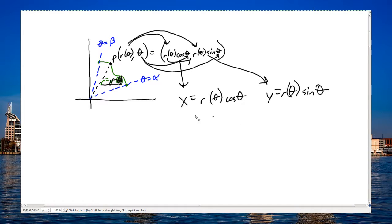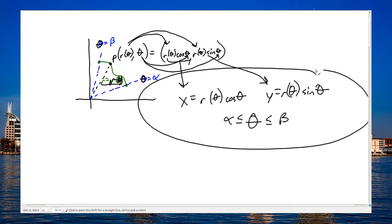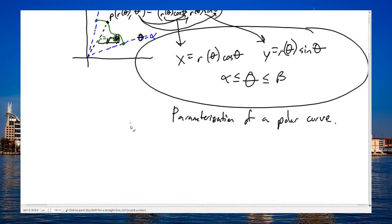Well this is a parameterization. Instead of t, we're using theta, but that's cool. The theta values must range between alpha and beta. So this is the parameterization of a polar curve, a curve defined by a polar equation. And I know what the length of a parameterized curve is. The length of a parameterized curve is a to b square root dx dt squared plus dy dt squared dt. This is the length of a parameterized curve.